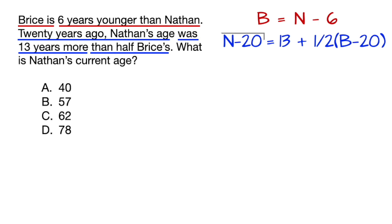Now remember, if N minus 20 represents Nathan 20 years ago, then Bryce must also be B minus 20. And finally, the question asks, what is Nathan's current age, which means solve for N. So now we have two equations from two sentences and have to solve for N.